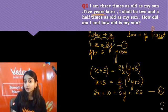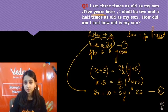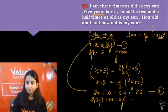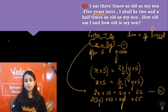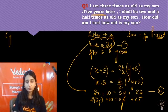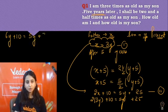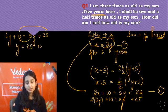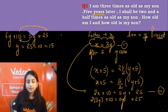From equation 1, we know x equals 3y. Substituting 3y into the second equation gives us 6y plus 10 equals 5y plus 25. So 6y minus 5y equals 25 minus 10, which gives us y equals 15. So the son's present age is 15.